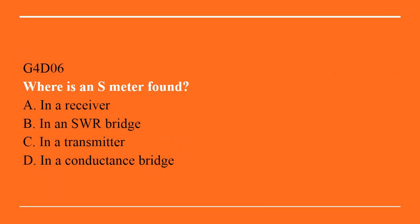G4D06: Where is an S meter found? A. In a receiver. B. In an SWR bridge. C. In a transmitter. Or D. In a conductance bridge. The correct answer is A. In the receiver.